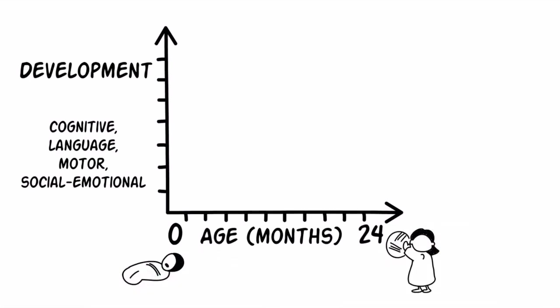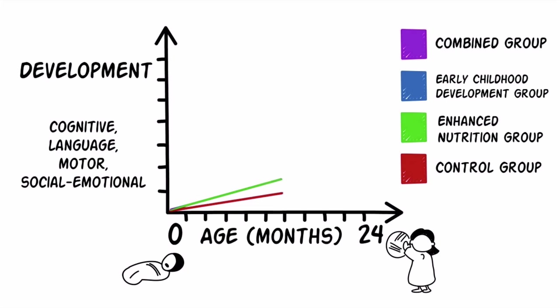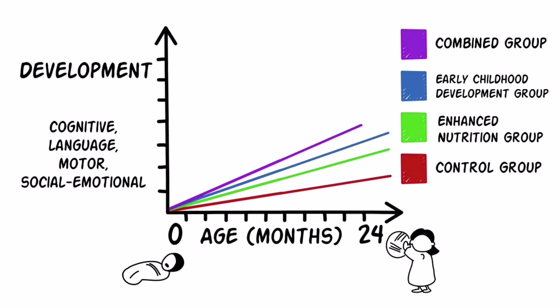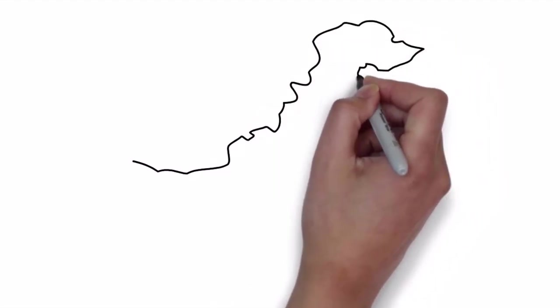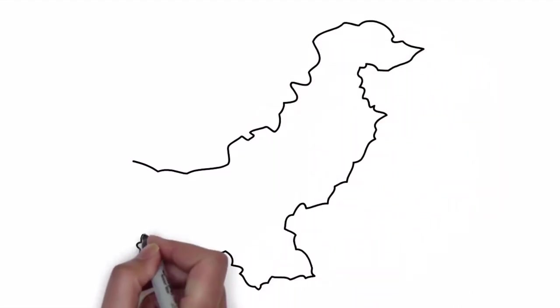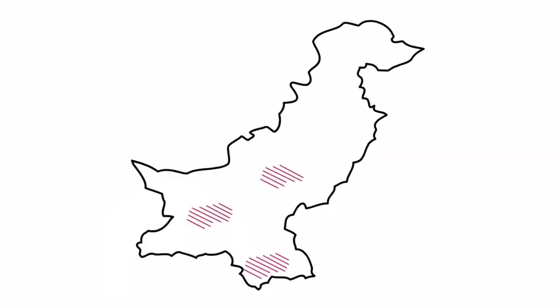This study found that at 12 months of age, all three intervention groups had significantly greater cognitive, language, motor and social-emotional scores as compared with the control group. This continued to be the case at 24 months of age. Based on the results from this RCT, further action can then be taken to improve the developmental outcomes of other children in similar circumstances.